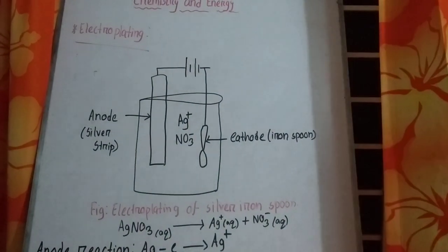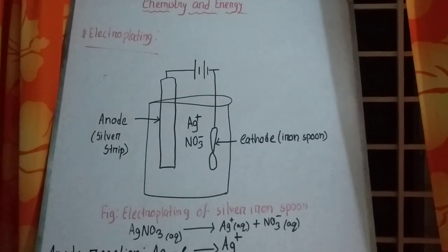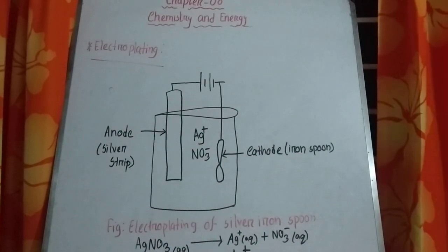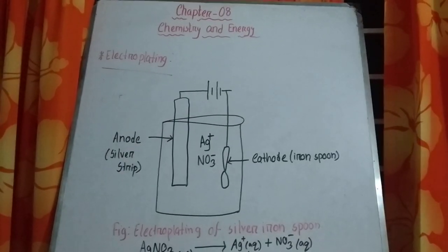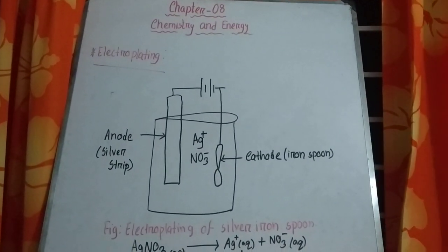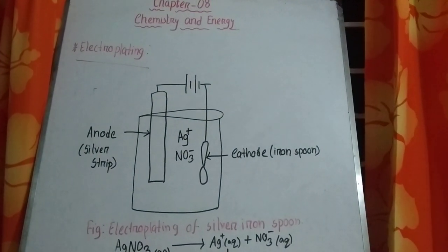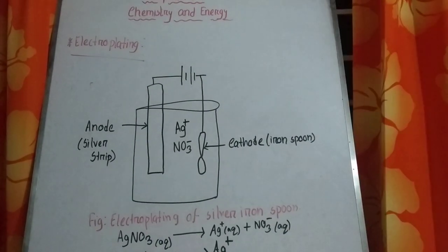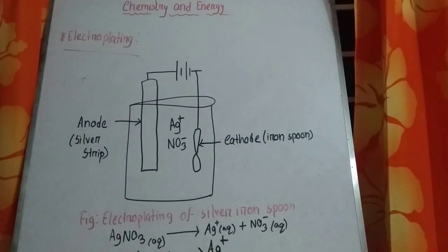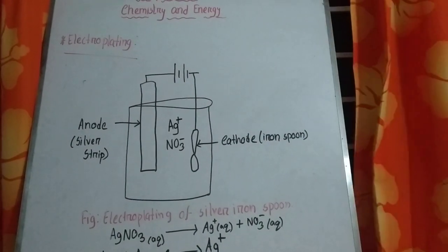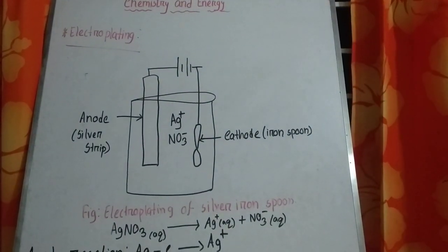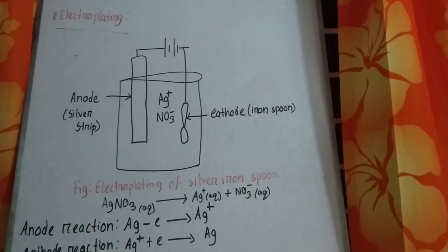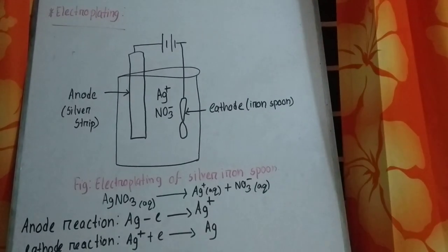Now come to electroplating. What is electroplating? The process in which coating of one metal is given on another metal by the process of electrolysis is known as electroplating. Suppose we want to give a layer of silver on iron metal — that is done by electroplating through electrolysis.